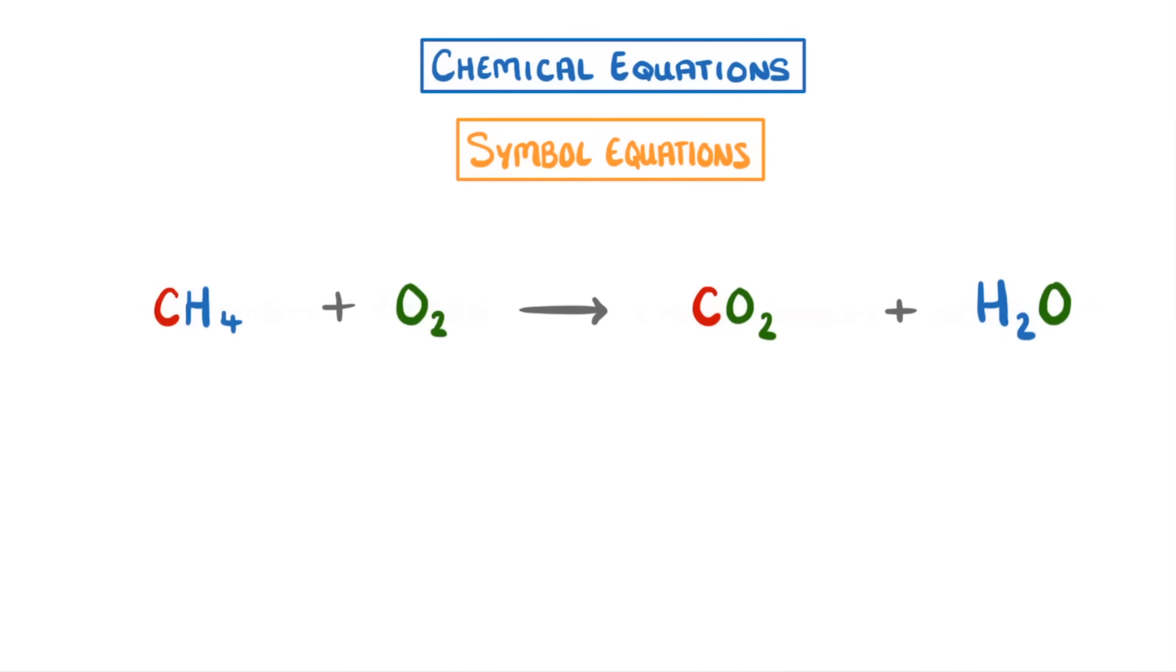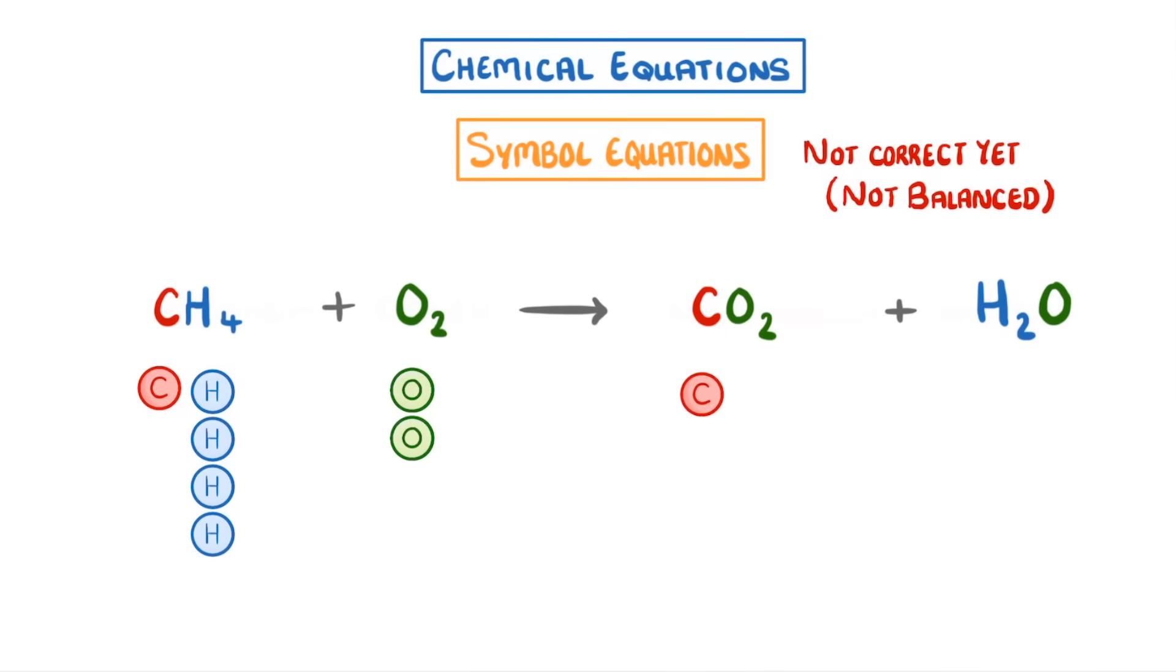Anyway, getting back to our equation. It's not quite right just yet, because we haven't balanced it. In order to be balanced, chemical equations need to have the same total number of each type of atom on either side of the arrow. In our example, we can see that on the left of the arrow, there's one carbon, four hydrogens, and two oxygens. Whilst on the right, there's one carbon, two hydrogens, and three oxygens. So our equation isn't balanced.